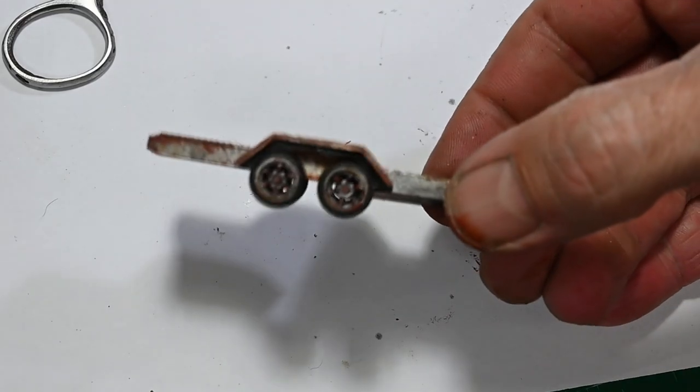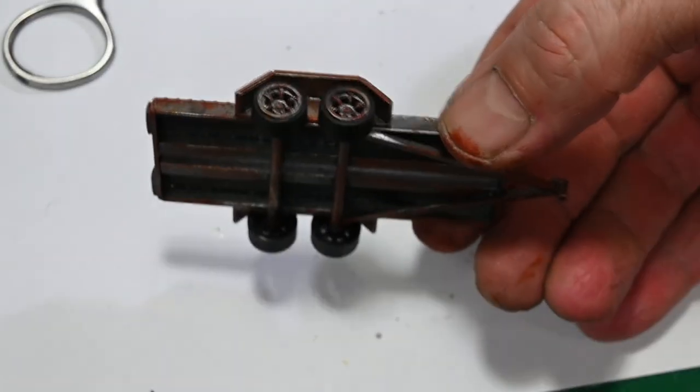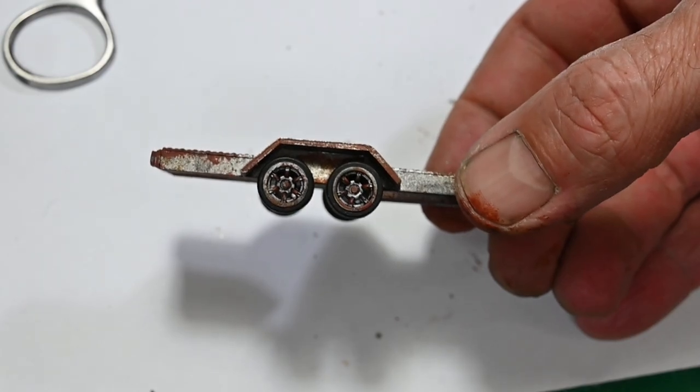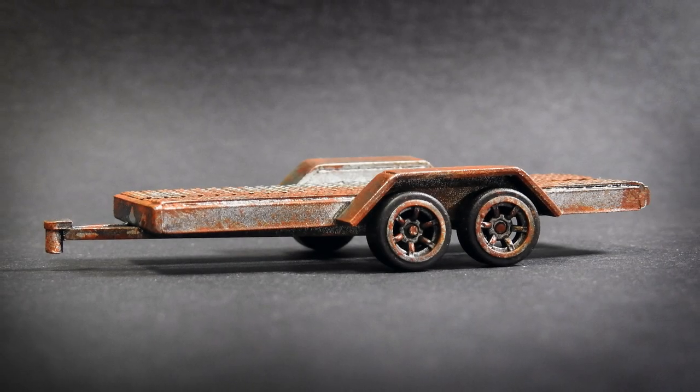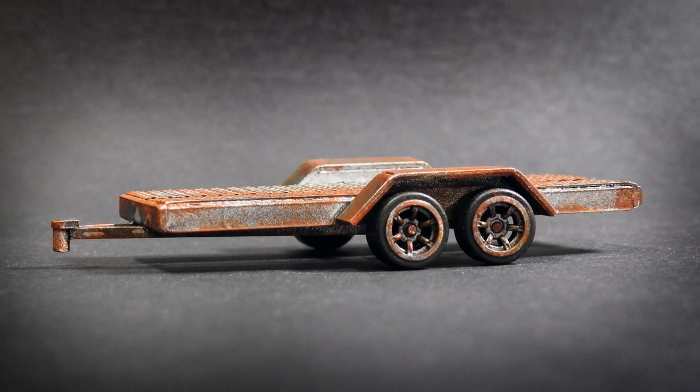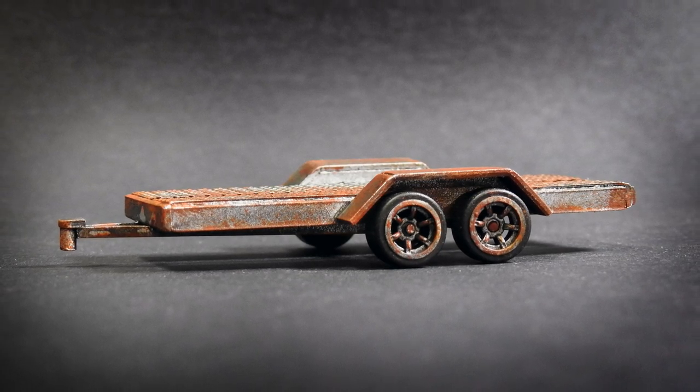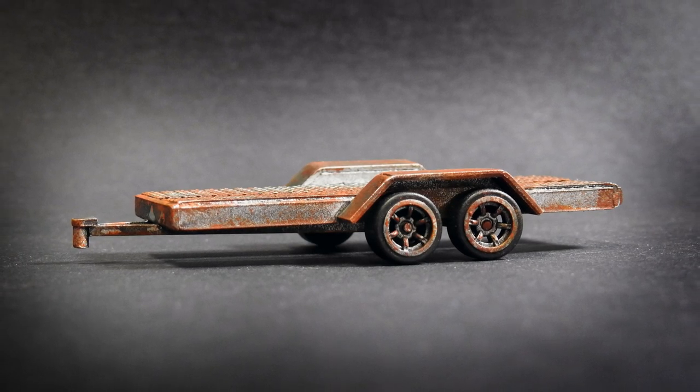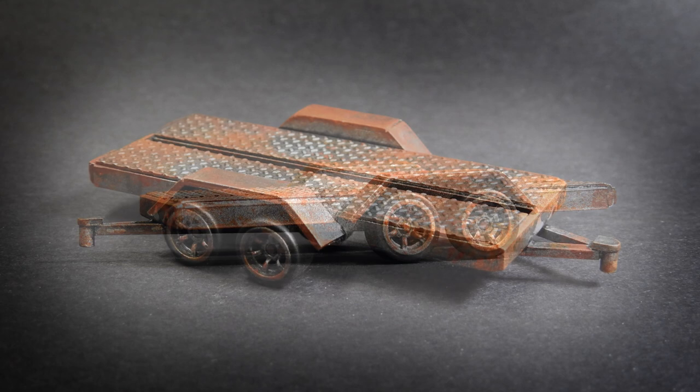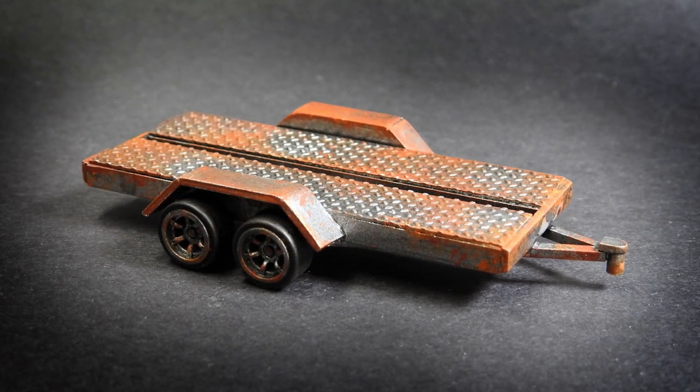And here's some wheels. Just rusted those up a little bit as well. So there you go. That's how you make a nice simple tandem trailer for your 1:64 scale diecast. Of course you could make it whatever size you need or more or less complicated. It's really not too difficult.